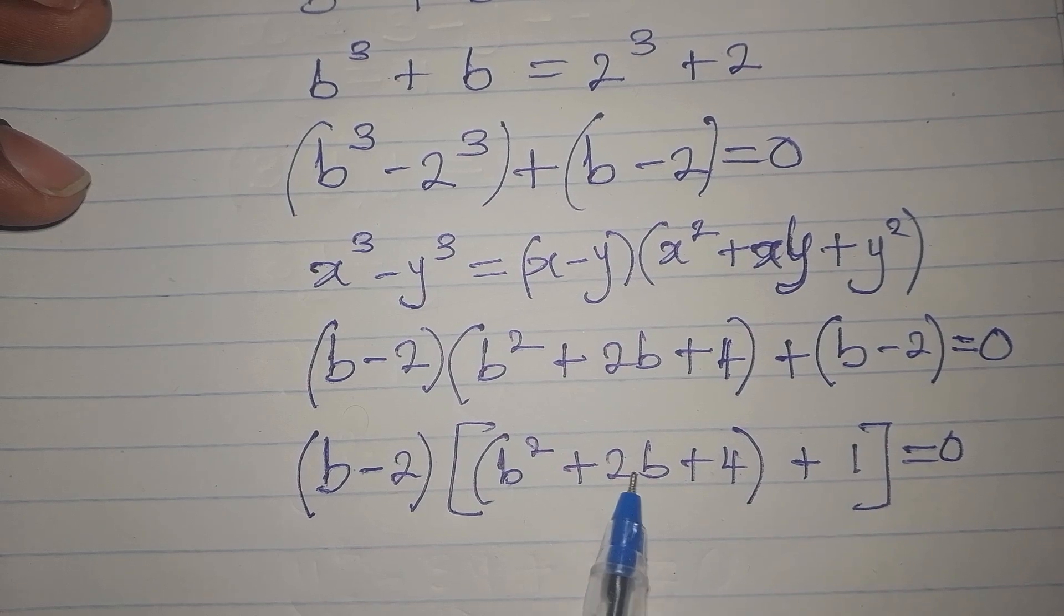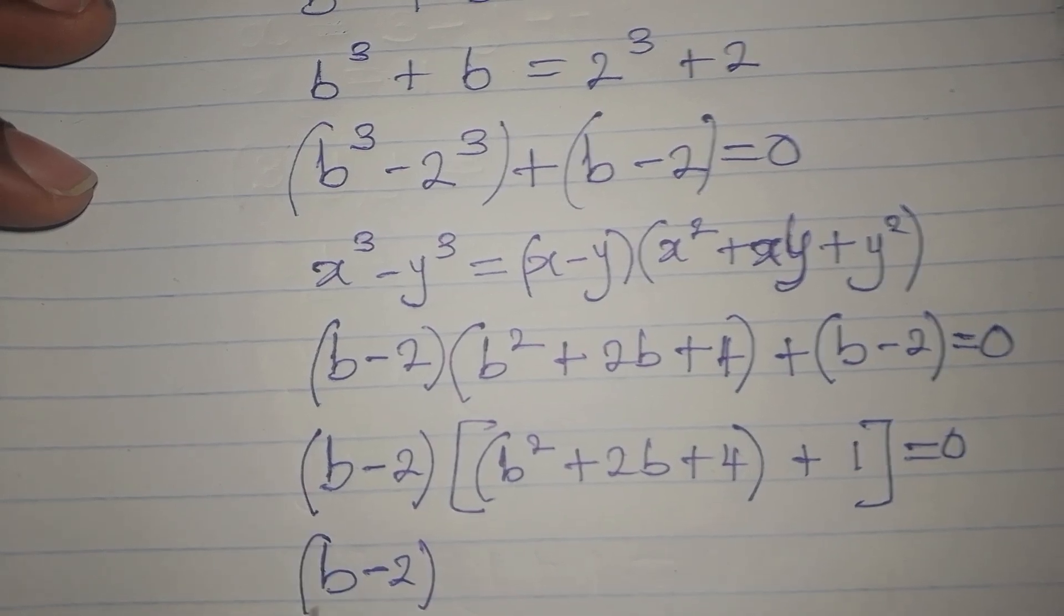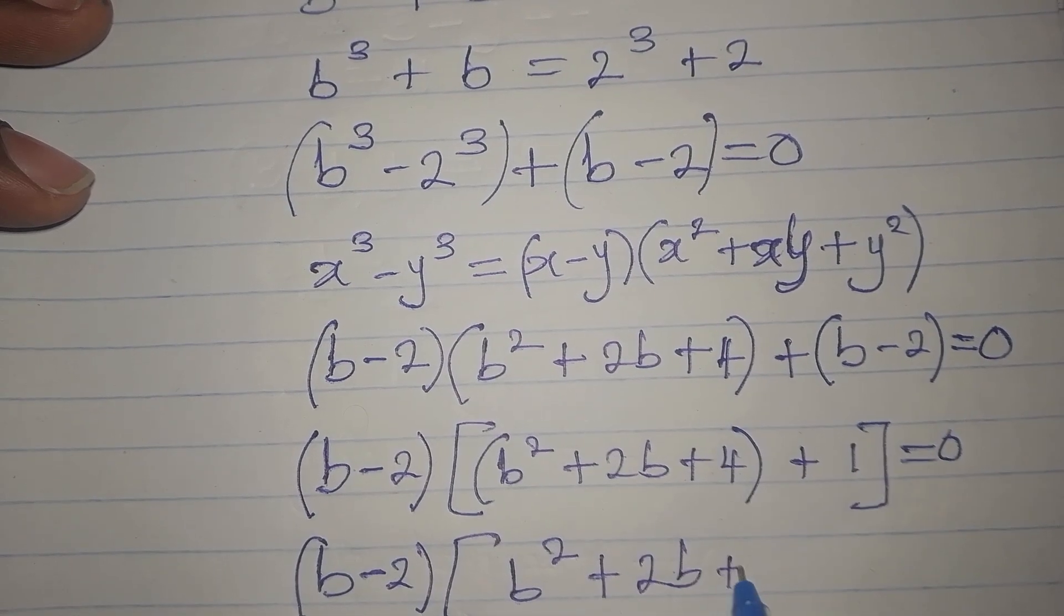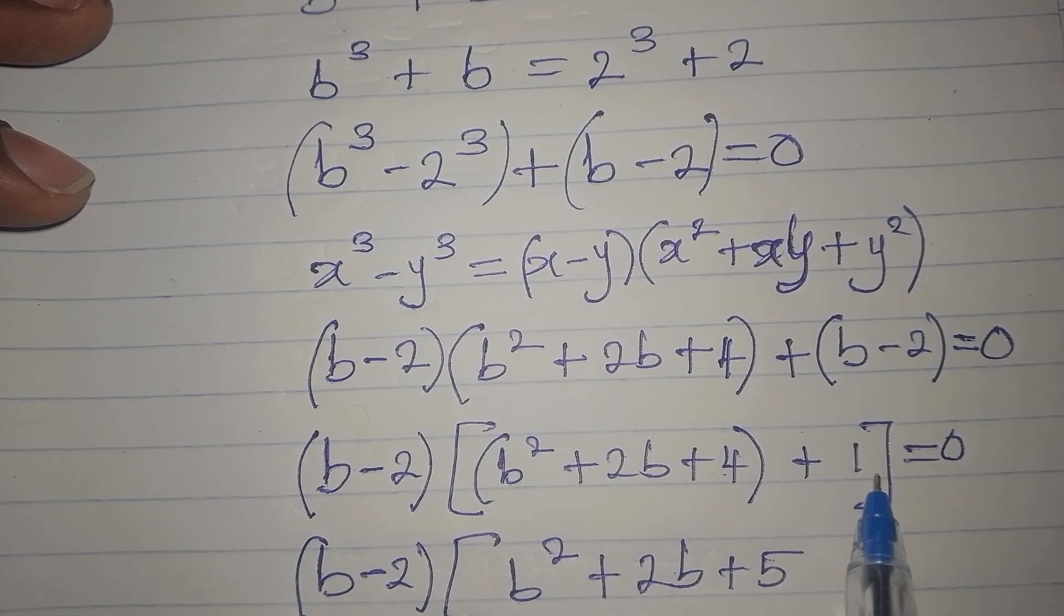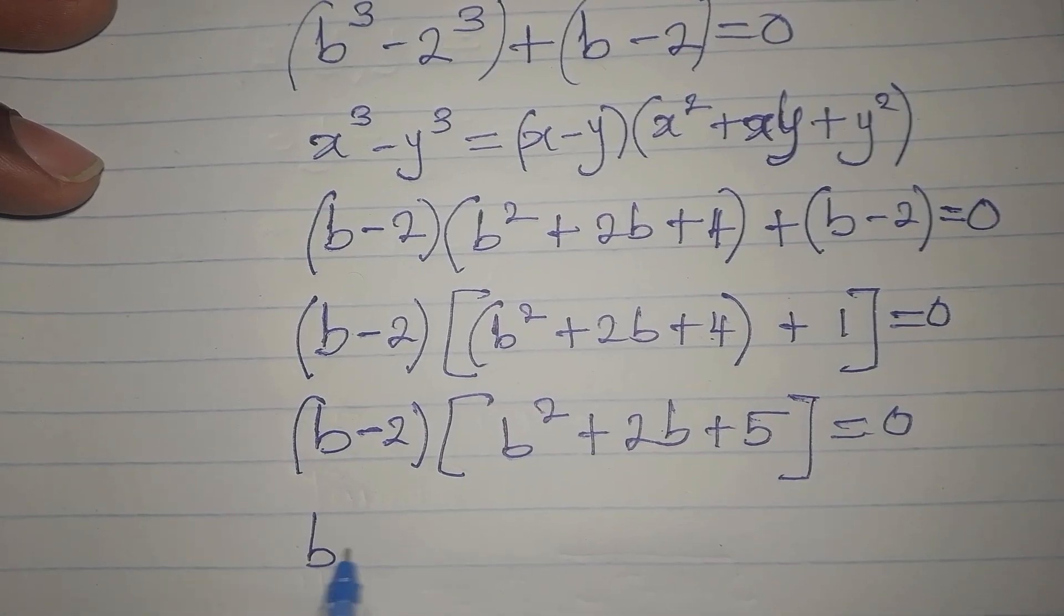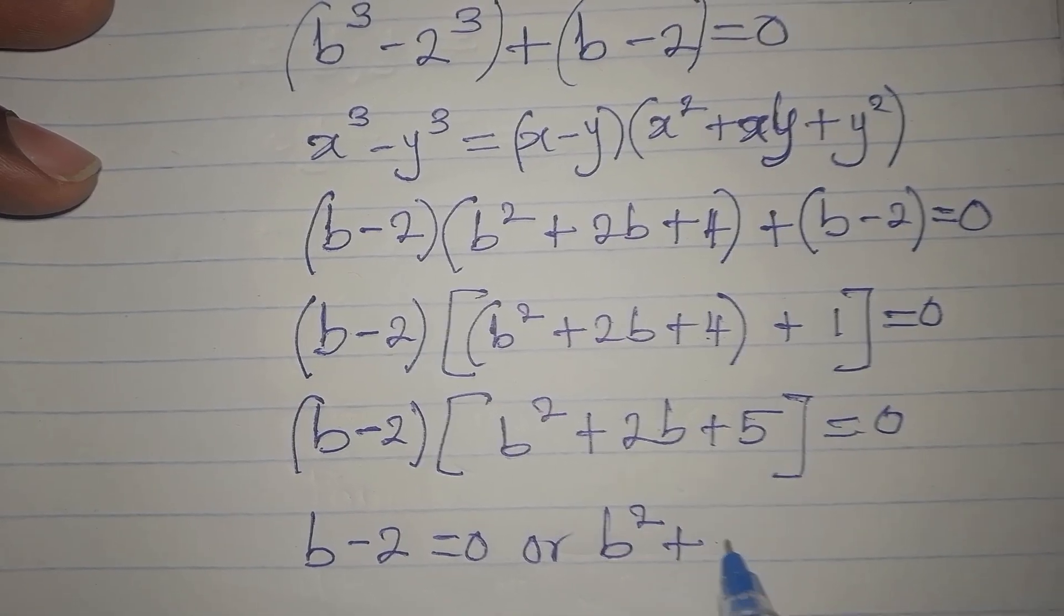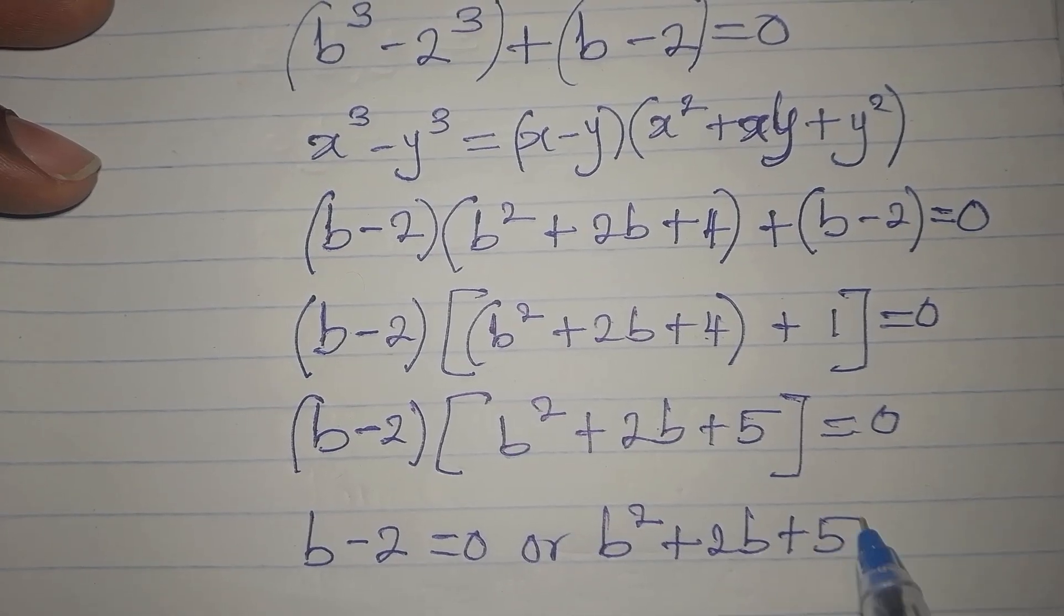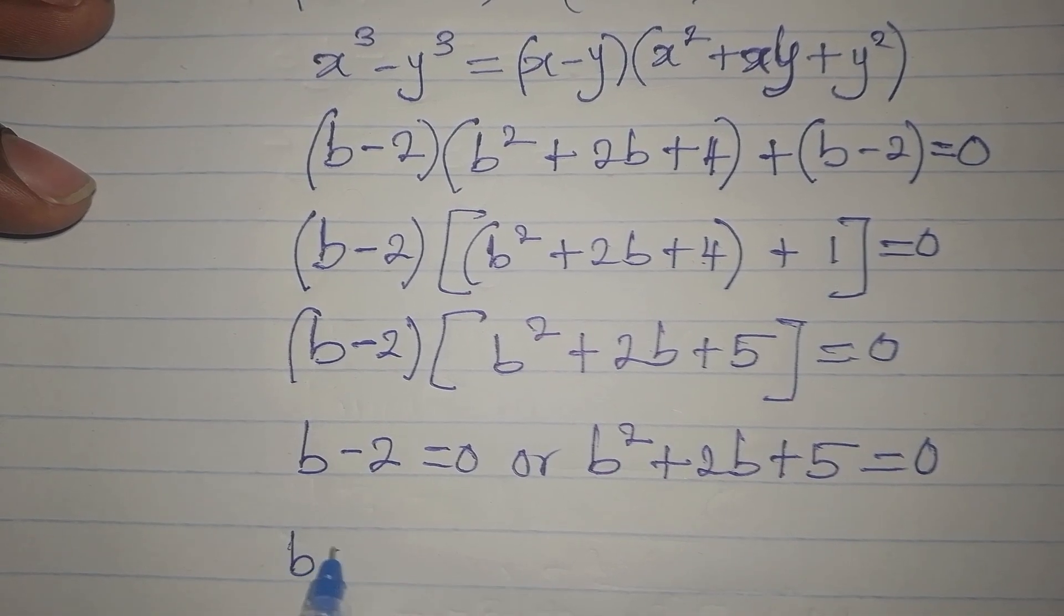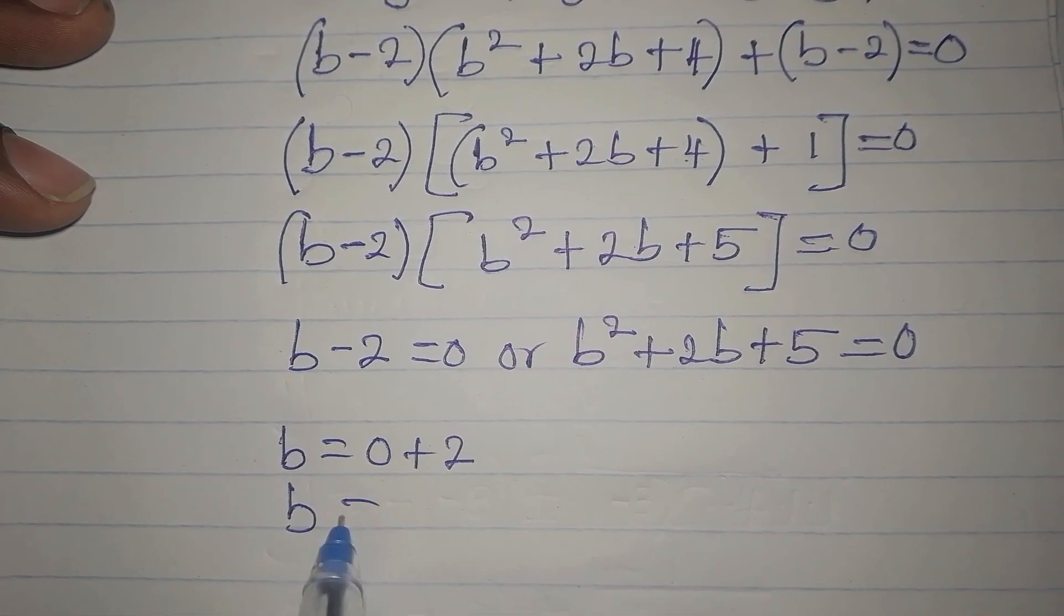We can simplify the terms in this bracket. We have (b - 2) as our common factor. Then we have b² + 2b + 5, because 4 + 1 = 5. Then we equate this to 0. From here, either b - 2 = 0 or b² + 2b + 5 = 0. From here, b = 2. This is one of the solutions.